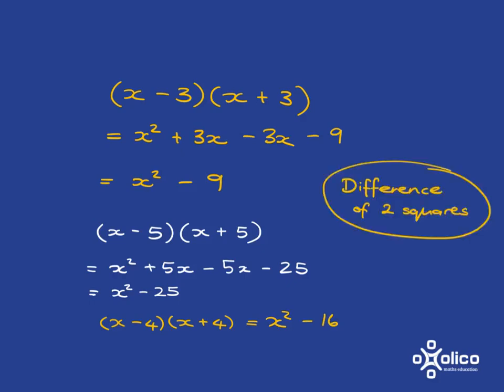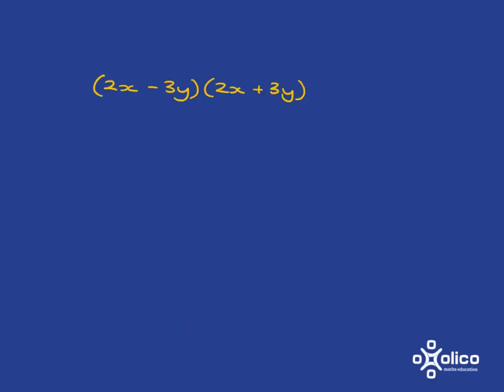And this is why we end up calling something like this a difference of 2 squares, because what you end up with is x squared, and then you've got 3 squared, so you get 9, and then you subtract them. It's a difference. x squared, 5 squared, and subtracting. And this pattern means that even if it looks revolting, it's actually really easy to do.